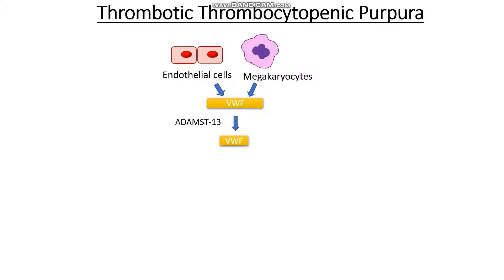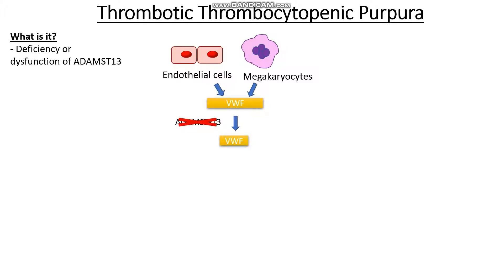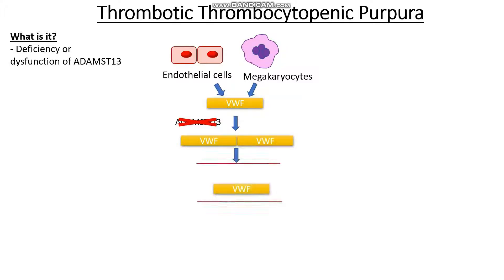In thrombotic thrombocytopenic purpura, we have a deficiency or defect in our ADAMTS13. And because we can't cleave our volatile von Willebrand factor anymore, this tends to build up in the blood. Once it builds up in the blood, this volatile von Willebrand factor can actually grab all of the nearby platelets, forming an initial platelet clot.